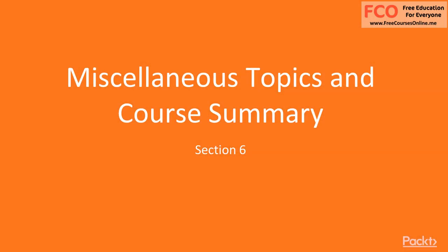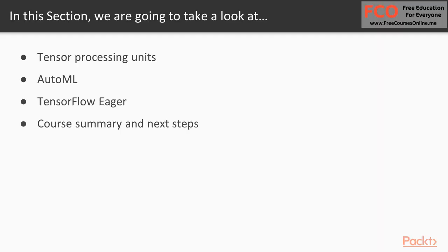Welcome to Section 6 on Miscellaneous Topics and the Course Summary. This section contains a handful of topics that I've been requested to cover, and it contains a blend of general concepts and some new TensorFlow developments. First, we'll take a quick look at Tensor Processing Units, or TPUs, Google's high-performance machine learning chips, and that's the subject of this video.